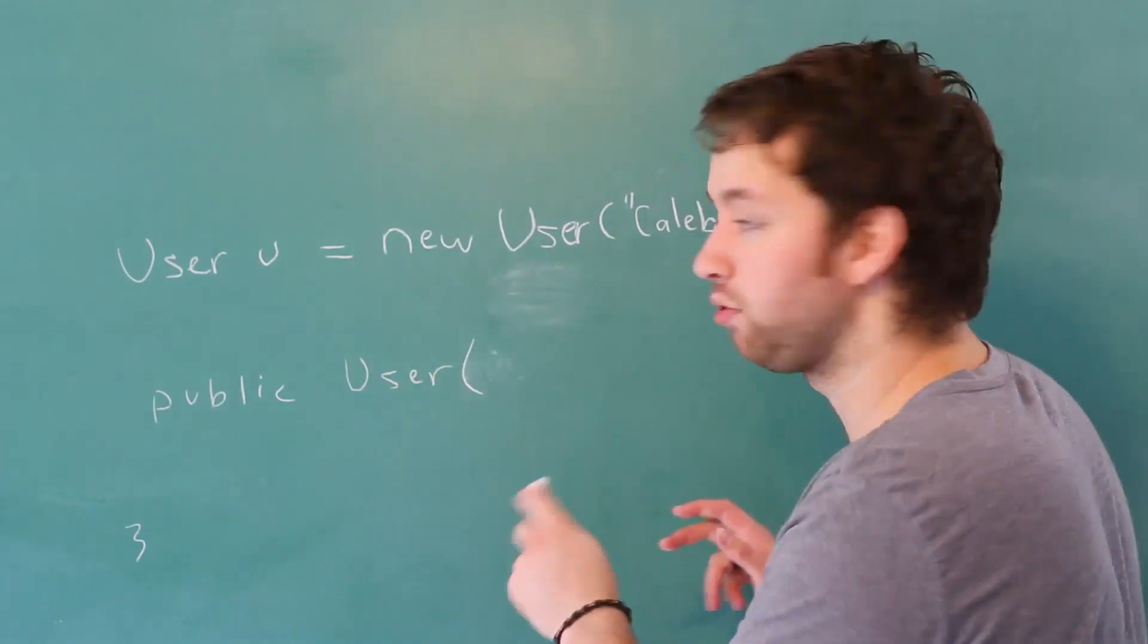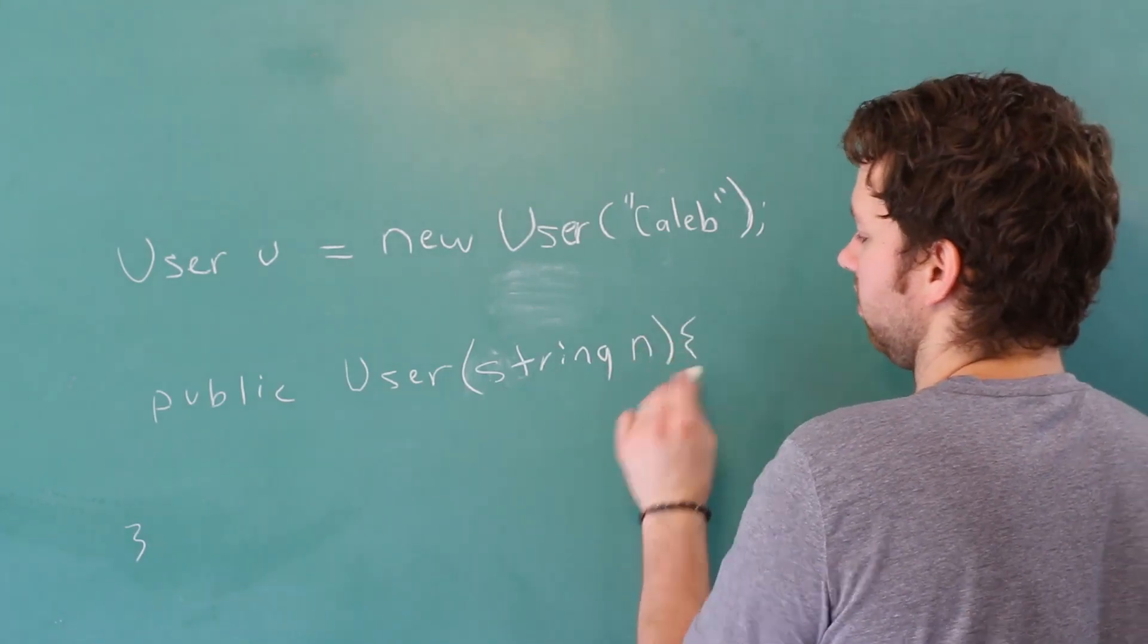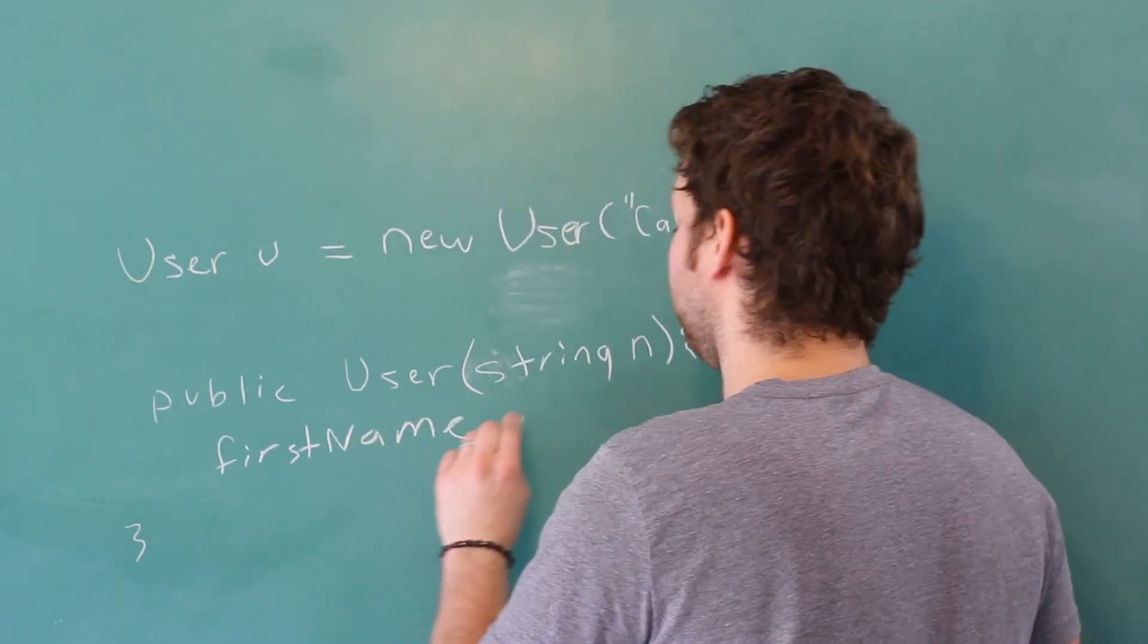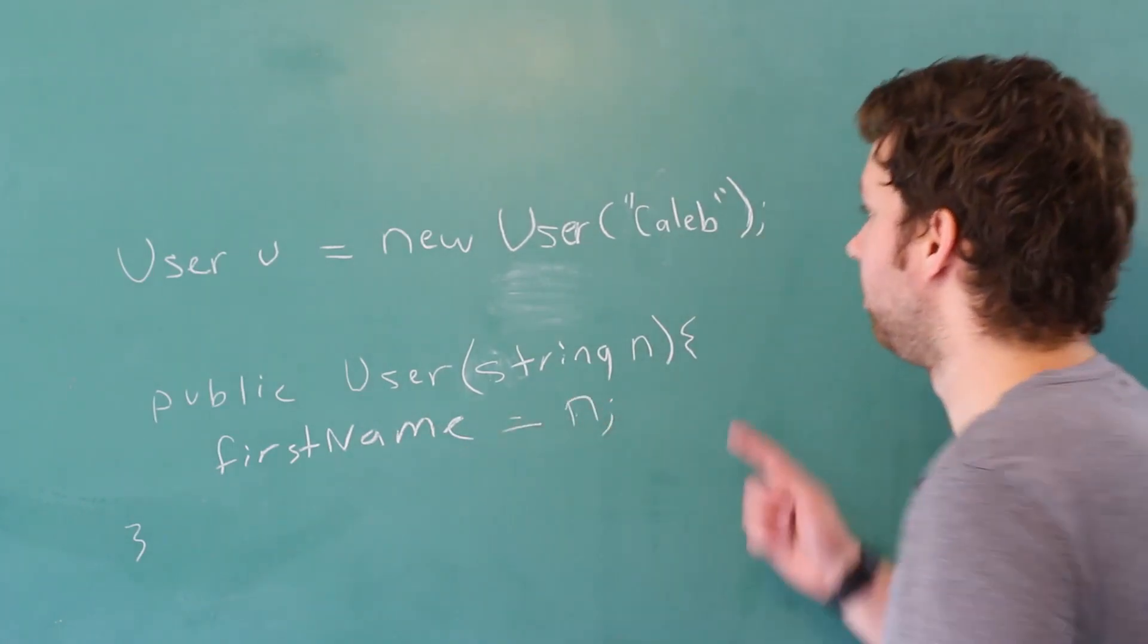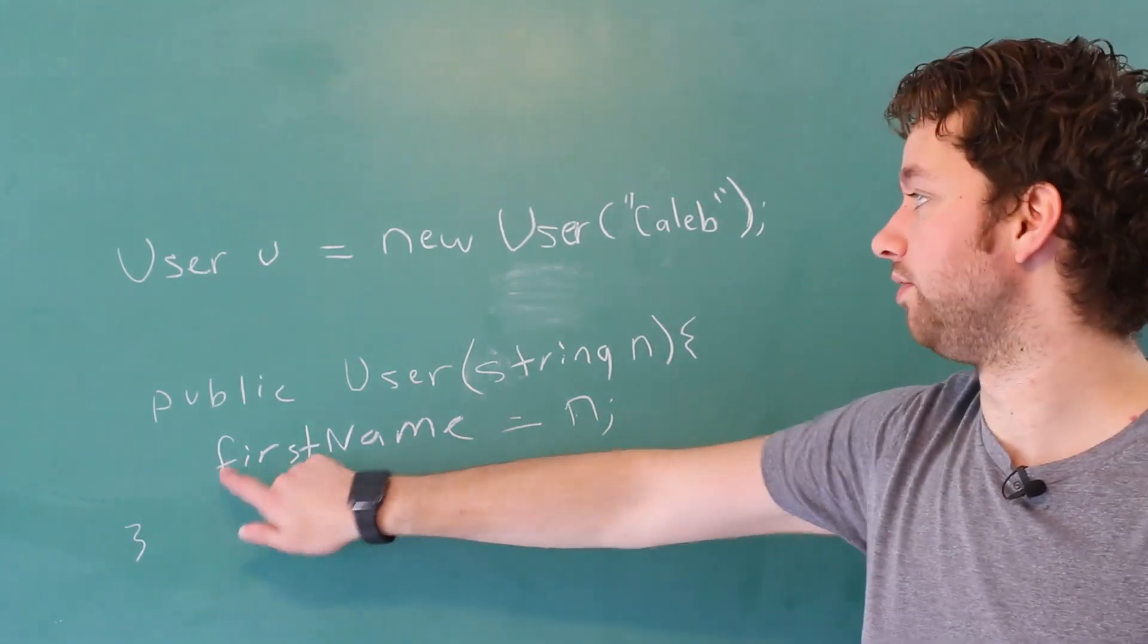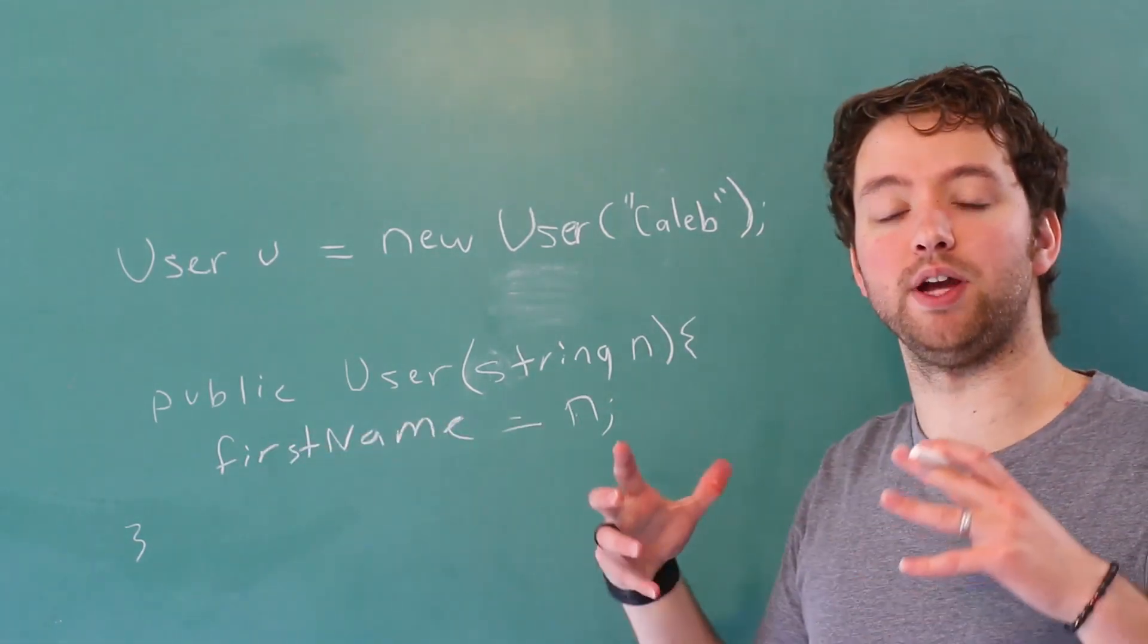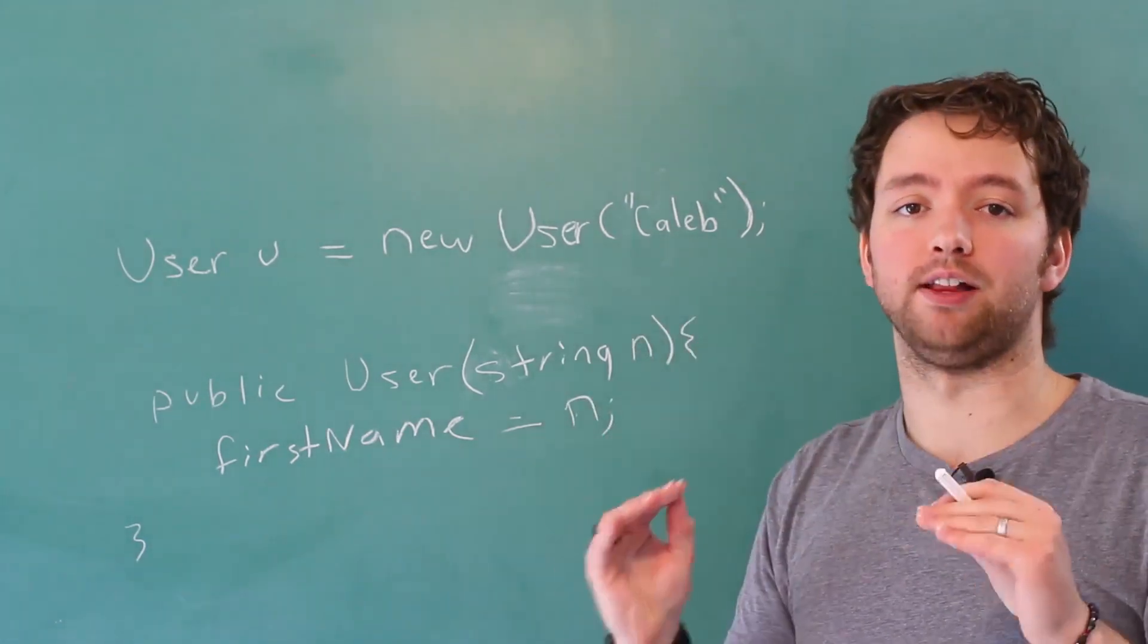So we'll put that in a parameter here. We'll just call it string n. And then all we have to do is say firstName is assigned the value n. So this is how we can get this value to go into the variables for the class User. It's basically a way to make sure from the very beginning the user has valid values.